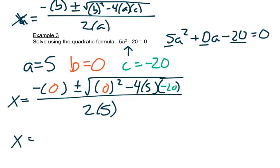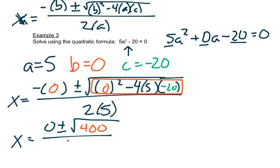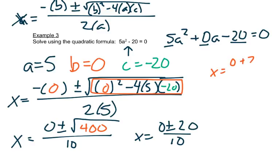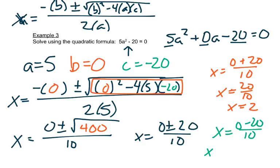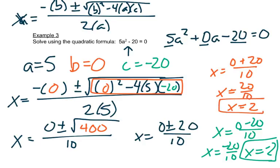Doing some simplifying: negative 0 is 0, plus or minus the square root of the whole inside done at once. If you type it in just like you see it, you should get 400, all over 2 times 5 which is 10. The square root of 400 is 20, so we have x equals 0 plus or minus 20 over 10. For the plus: x equals 0 plus 20 over 10, which is 20 over 10, which is 2. For the minus: x equals 0 minus 20 over 10, which is negative 20 over 10, which is negative 2. So our two answers are positive 2 and negative 2.